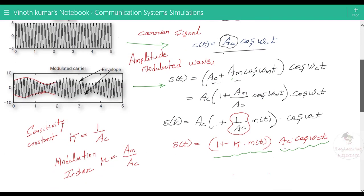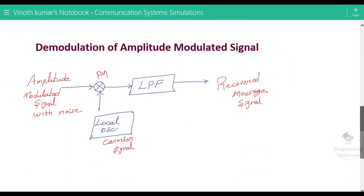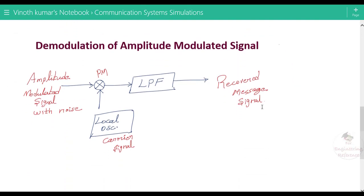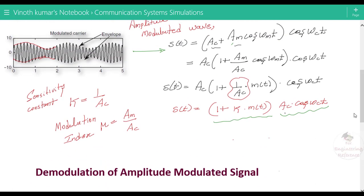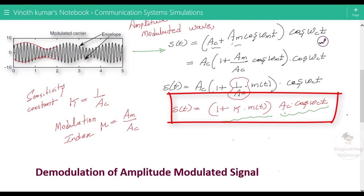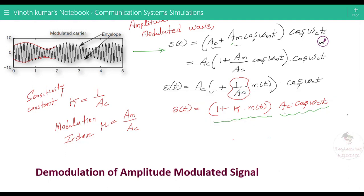So at the receiver, the received modulated signal — the carrier signal which is carrying the information — is modulated. The amplitude modulated signal is to be demodulated at the receiver side to recover the original signal and extract the information. The modulated signal is expressed as S(t) = (1 + k·m(t)) · Ac·cos(ωc·t), where k is the sensitivity constant.